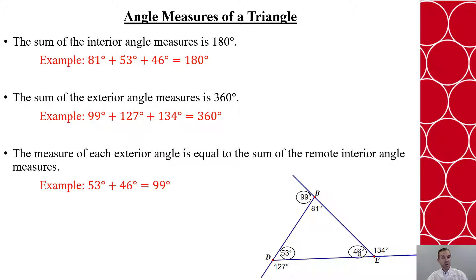This is true because the 99 and the 81 are supplementary, and the 81 plus these two have to also add up to 180 degrees. Thus, those two measures have to be equal, hence why this is true. That means also that the 134 degrees has to equal the 81 plus 53, and the 127 degrees has to equal 81 plus 46. So it holds in all cases of each exterior angle.